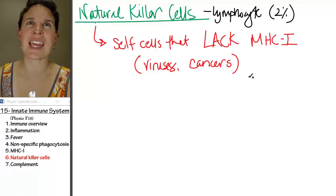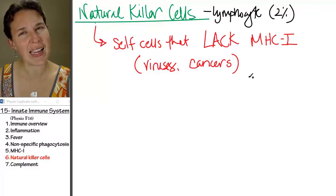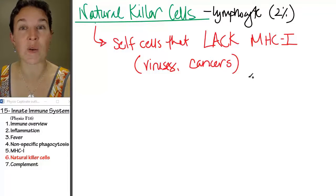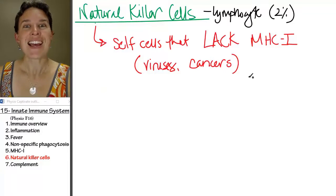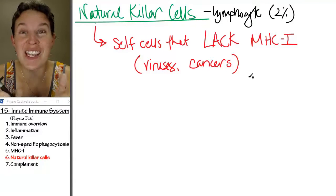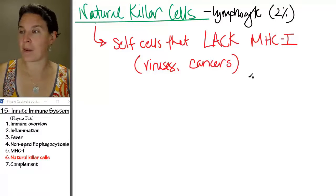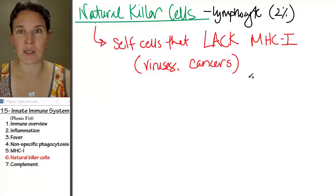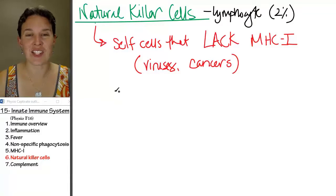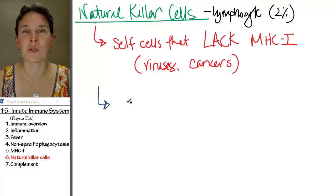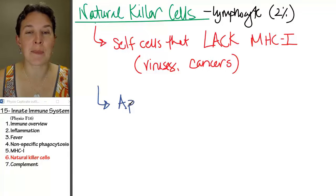Sometimes cancer cells also have an MHC1 platform that is not functioning. So cancer cells can sort of hide because they're not posting information about what's going on inside of them. So natural killers come along and they're like, something is missing here.